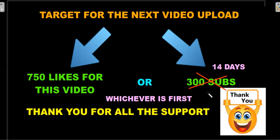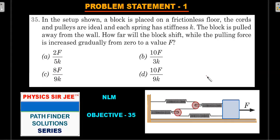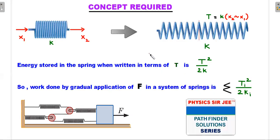The first problem: in the setup shown, a block is placed on a frictionless floor. The cords and pulleys are ideal, and each spring has stiffness k. The block is pulled away from the wall. How far will the block shift while the pulling force is gradually increased from zero to the value of F? This is like an equilibrium state — you are very slowly increasing the value of F in gradual steps, and when force F is finally reached, the block will be at rest.